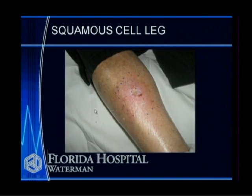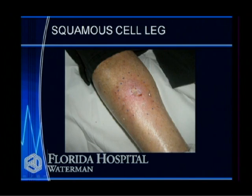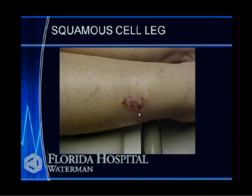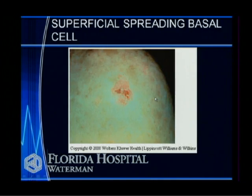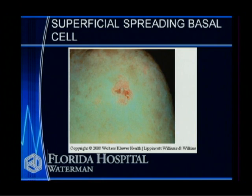Skin cancer can also occur commonly on the lower extremities. This is a skin cancer on the shin, and this one is on the lateral aspect of the calf — also a squamous cell carcinoma. Then you have superficial spreading basal cell carcinoma, where it forms like a plaque and grows very superficially over the surface of the skin. It's not that invasive, but it can cover a wide area.